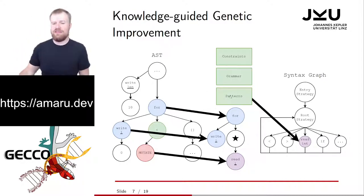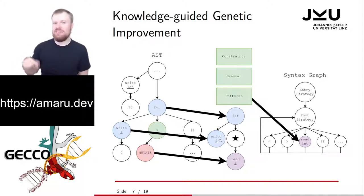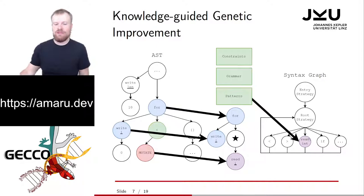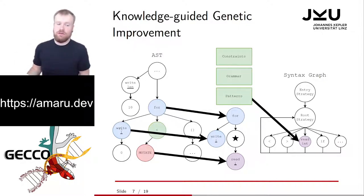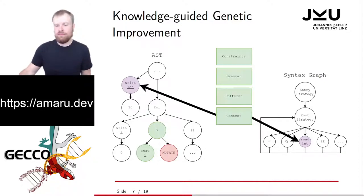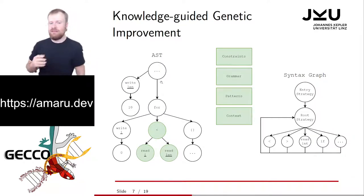Now we can look at an example of applying a pattern in knowledge-guided genetic improvement. Let's say we have a pattern where, if we have a for loop that writes a step variable, we want to obviously use that step variable in our condition. We enforce this because the pattern matches: this mutation point must read an integer. Only the read integer strategy activates, and we only activate for one of two available variables — len or i. Because the pattern says we need to use the variable in the for loop, we mutate i in. At the next mutation point, we look at the context again. The less or greater could activate, but maybe the depth is already too high, so we say the read int can activate because we can still read the length variable. And that's basically how knowledge-guided genetic improvement works.